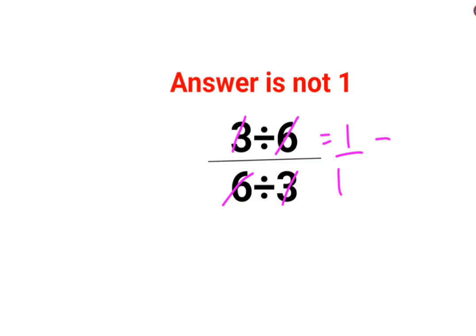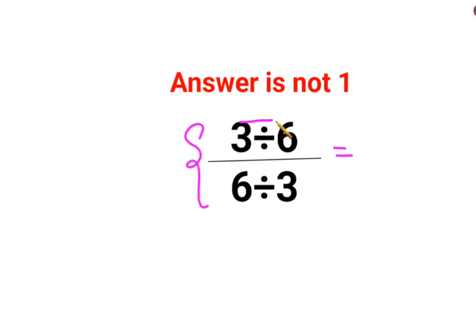No, that is not how things normally work in mathematics. It is important to realize it's a fraction. So here first we need to sort out the numerator, which is 1 by 2. And then we sort out the denominator, which is 2. And since it is a fraction, that means you need to divide it.